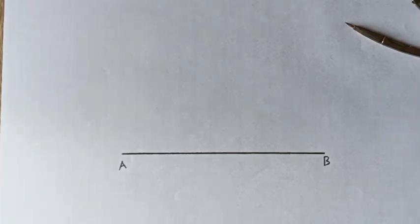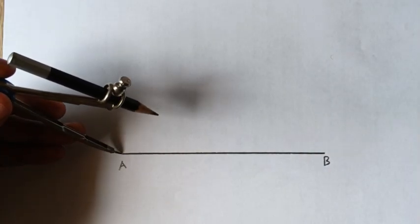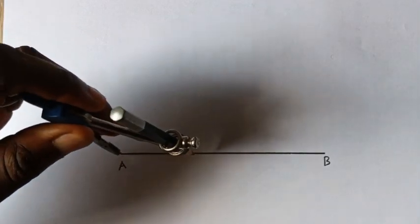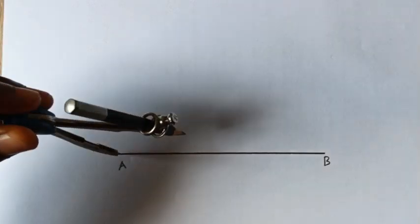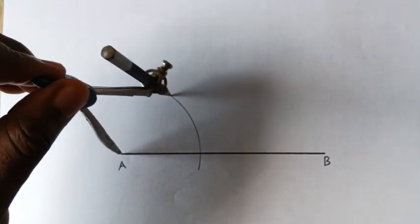So in order to draw a 60 degrees angle, you stand at this point which is your point A, the origin. You now open your pair of compass to a convenient radius and cut an arc.